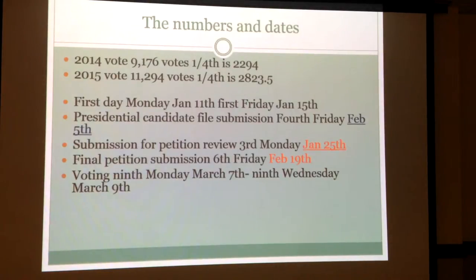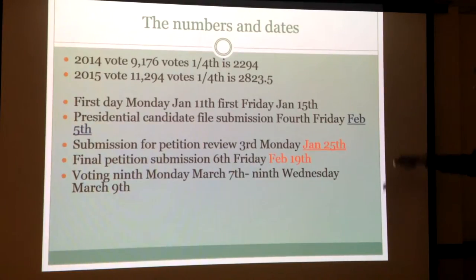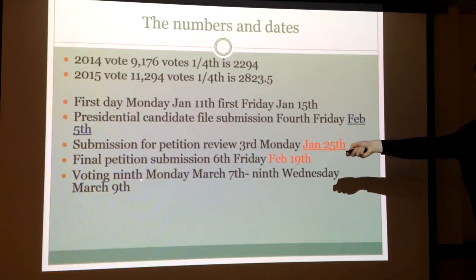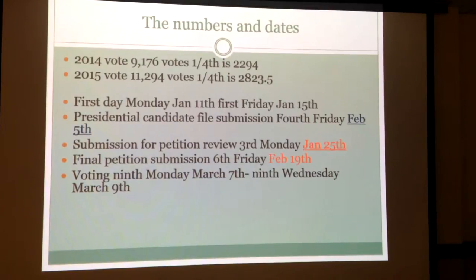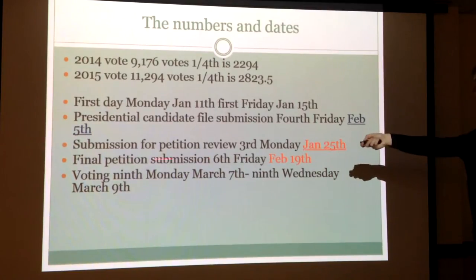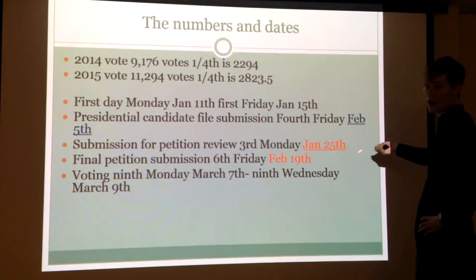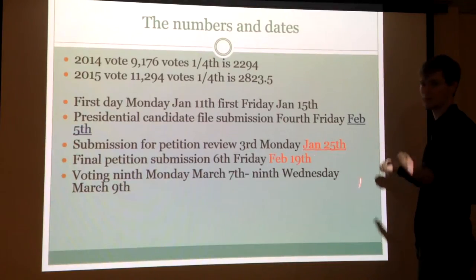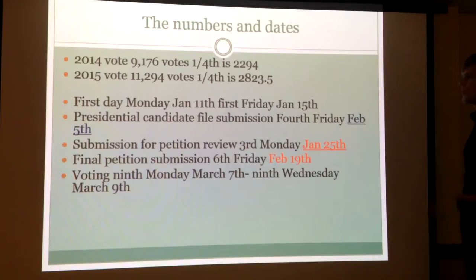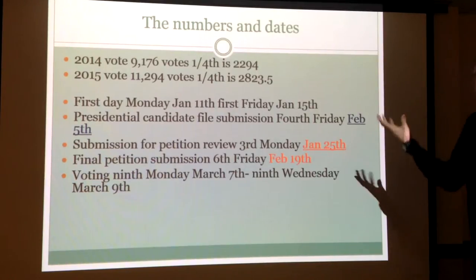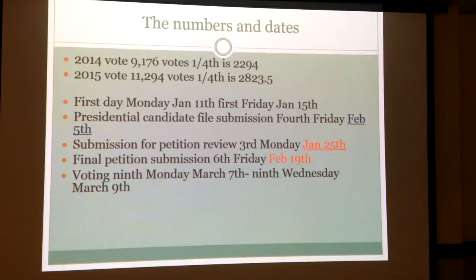These are the dates in reality. The voting is March 7th through March 9th, and for the other dates: if we were going to do an initiative submission, it would be January 25th, while the presidential candidate gets all the way to February 5th — which is unfair.